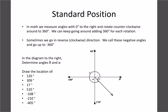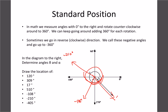For negative 108, that means we're going backwards — 90 would be there, and 108 would be a little bit past that. For negative 210, that's negative 180, so negative 210 would be somewhere about there. And for 405, we know it's 360 all the way around, so that means we have another 45 degrees or so past the 360 mark.